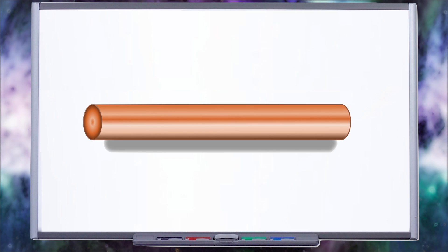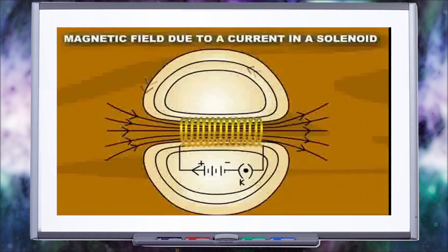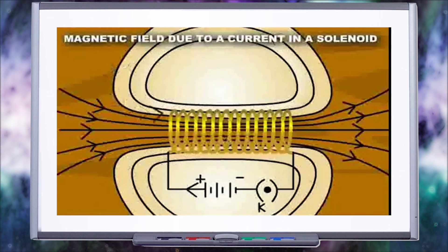When a current is sent through a straight conductor, it creates a circular magnetic field around it. Since the solenoid has a straight conductor wrapped around many times, the magnetic field is amplified and the field lines resemble that of a bar magnet.